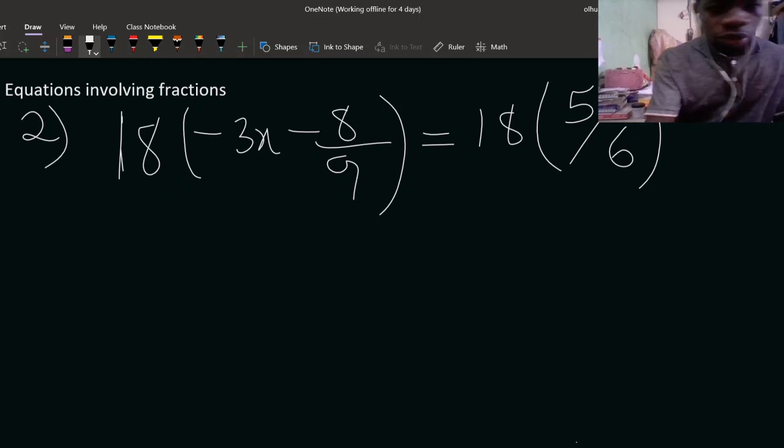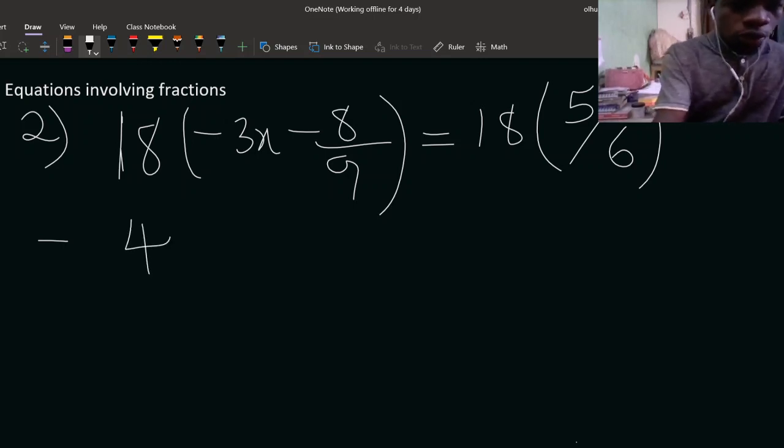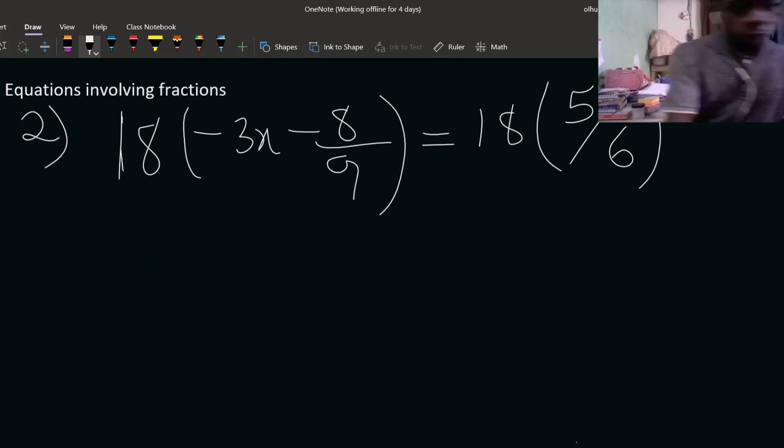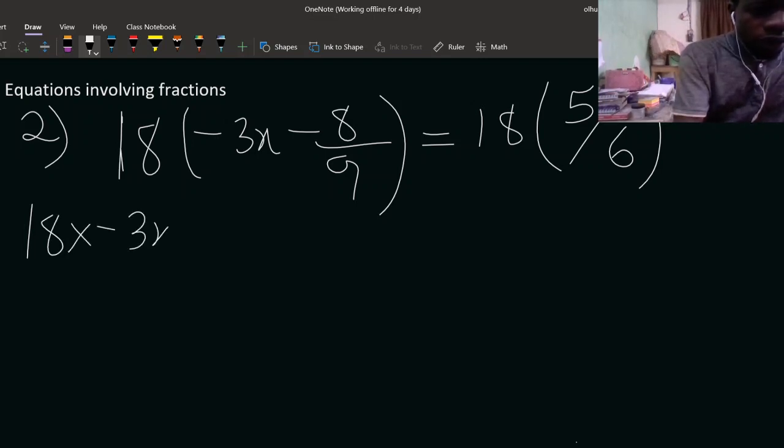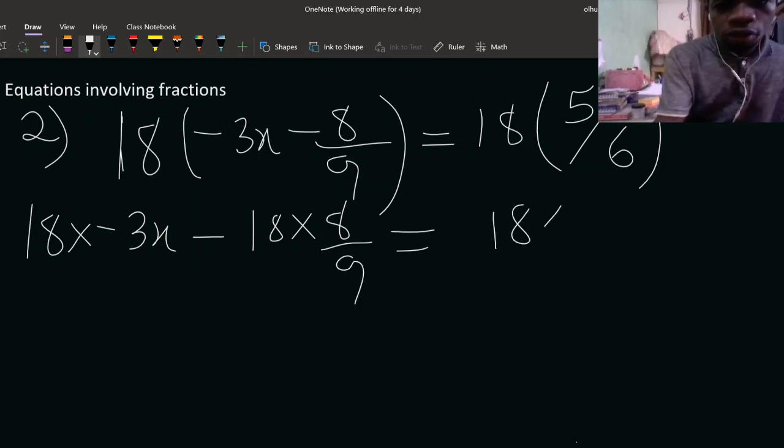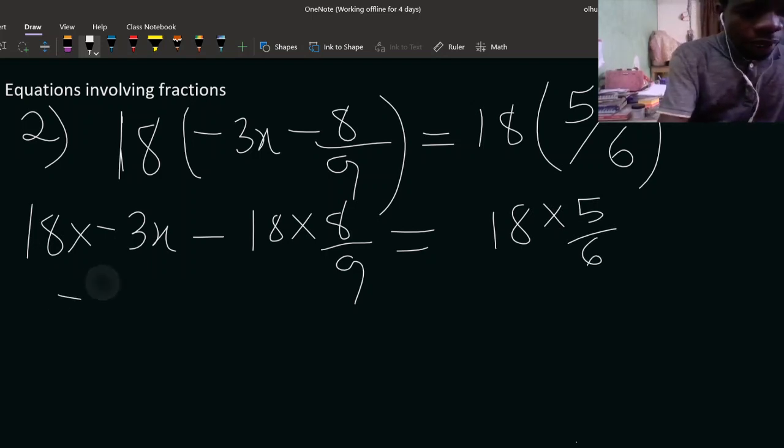So let's go. 18 times 3x, what do we have? 3 times 18. 3 times 8 is... that would be minus something. 3 times 8 is 24, you keep 2. 3 times 1 is 3 plus 2, that is 54. So you have minus 54x. Then you equally have 18 times minus 8 over 9, and that can be equal to 18 times 5 over 6.